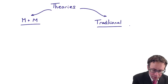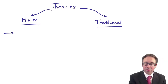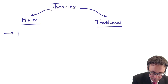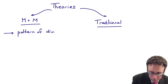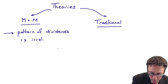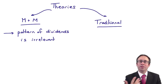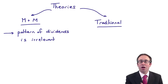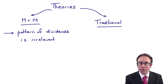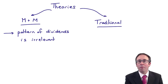The key thing that Modigliani and Miller found with their theory is that they stated that the pattern of dividends is irrelevant. When we're looking at paying out a dividend out of our business's earnings, it doesn't matter what the level of the dividend is from one year to the next — the shareholders will be indifferent, and if they are indifferent about that level or pattern of dividend, then the share price will not be changed.